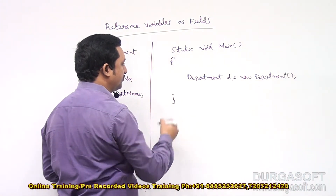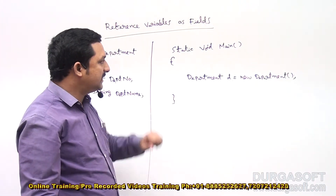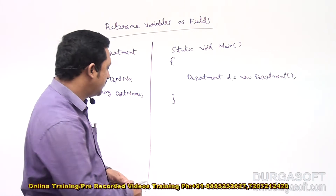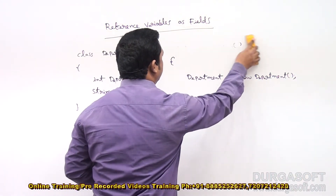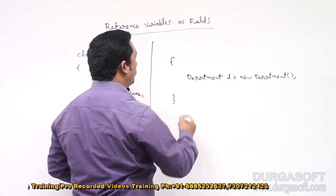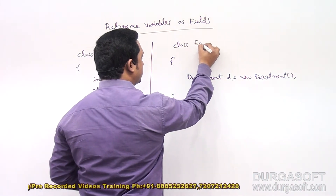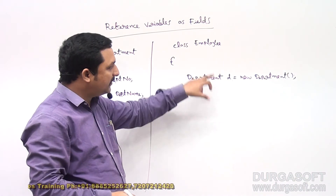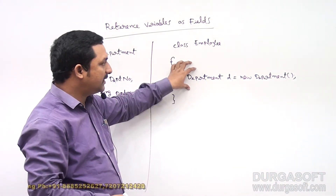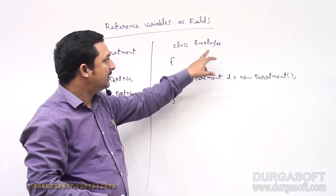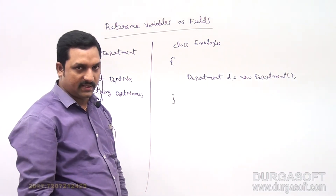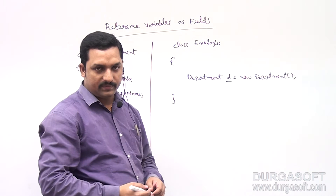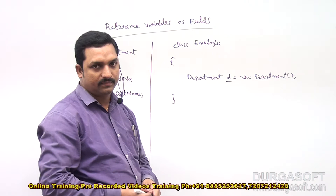Generally we create this type of reference variable inside the main method. Now, instead of creating it inside the main method, is it possible to create the same inside some other class? Yes, that is what this topic is about. I am going to create another class — Employee class. Every employee should belong to any one department, so I am going to create a Department type reference variable in the Employee class as a field. That variable D is both a reference variable and a field inside the class.